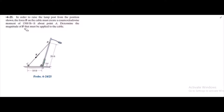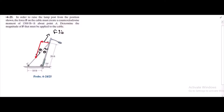So to solve this problem, first of all, we have to resolve force F into its components. So I have two components for the force F: one parallel to the pole and another one which is perpendicular to the pole. Let's label them — let's call this angle theta; this angle is also theta. Then this force component is F sin theta and this component is F cos theta.